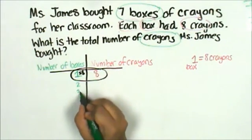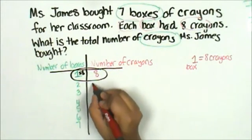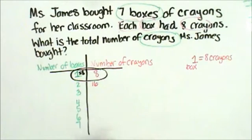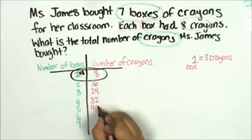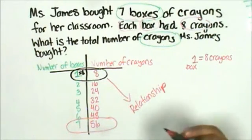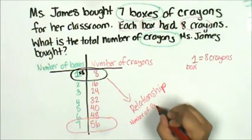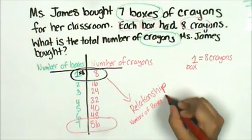Here's box two, three, four, five. If one box has eight, two times eight is sixteen, three times eight is twenty-four, four times eight is thirty-two, five times eight is forty, six times eight is forty-eight, and seven times eight is fifty-six. The total number of crayons she bought was fifty-six crayons. The relationship is the number of boxes times eight.